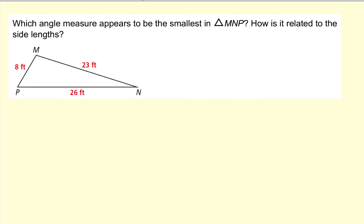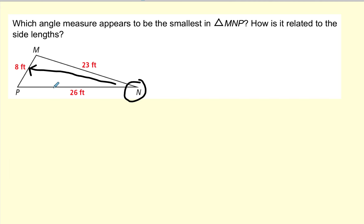Let's take a look at this triangle again and see which angle appears to be the smallest — the one not opening up as much. Notice that angle N appears to be the smallest, and it's actually opposite the shortest side. So this idea of biggest angle opposite longest side and smallest angle opposite smallest side is very real.